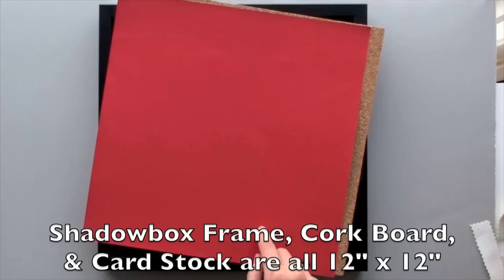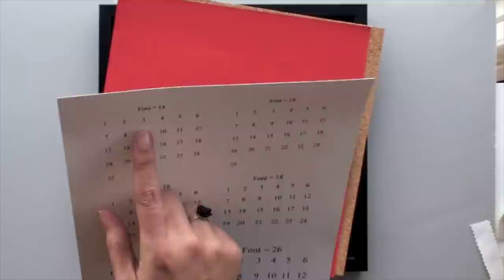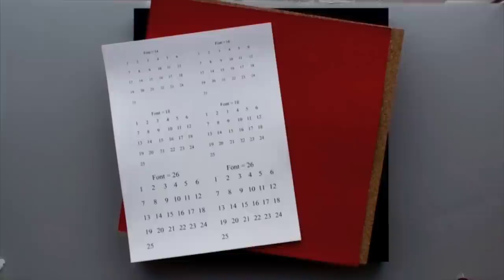You'll need a box frame, a piece of corkboard, and cardstock, all measuring 12 by 12. And then I went ahead and put this PDF together for you. I'm going to be using the font 14 numbers. And again, you can find that over on my blog.